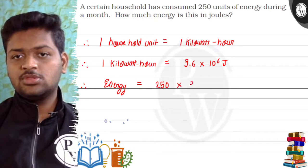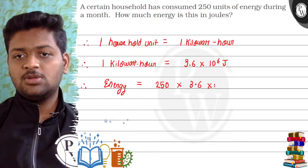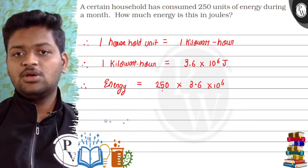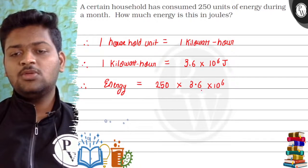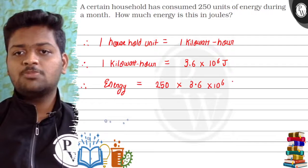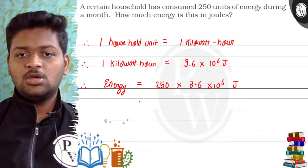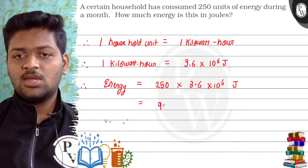Into 3.6 into 10 to the power 6. Since 250 units consumed and how much is 1 unit? 3.6 into 10 to the power 6 Joule. Now we solve this, so this will be 900 into 10 to the power 6 Joule.